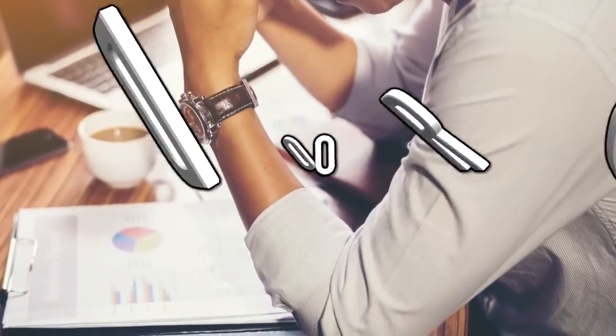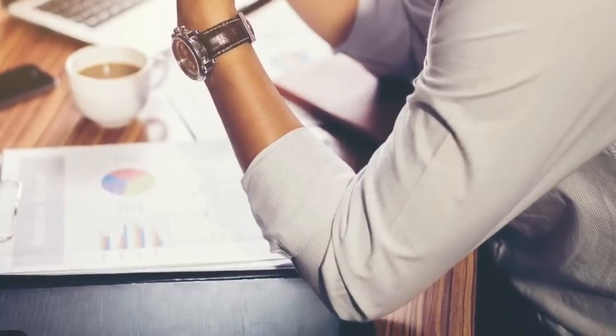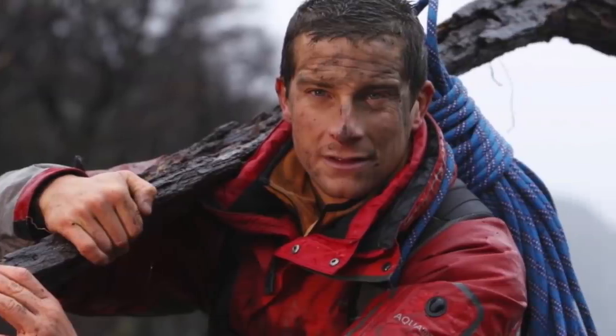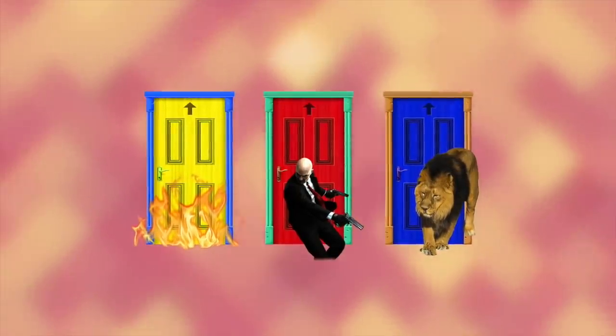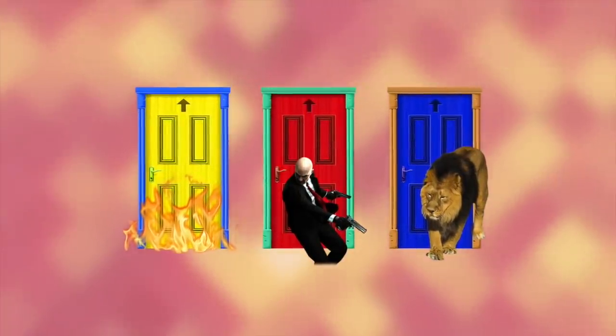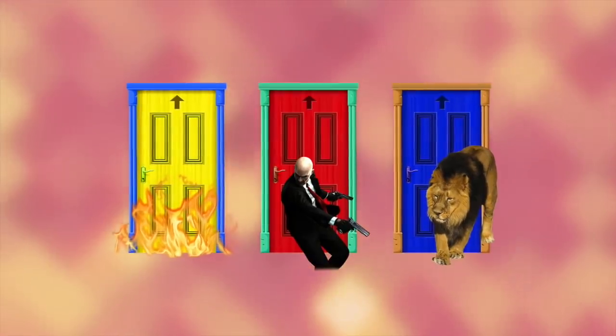Next up is 'Doors.' This is a personality question which shows how well you cope under pressure and tests your survival skills. Do you fancy yourself as a bit of a Bear Grylls? Well then answer this: behind door one is fire, behind door two is a gunman, and behind door three is a lion that hasn't eaten in three years. So which one do you enter? I'll run the timer.